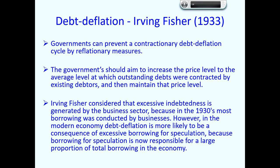Irving Fisher said that governments can prevent this contractionary debt deflation cycle by reflating the economy. Fisher proposed that governments should aim to increase the price level to the average level at which outstanding debts were contracted by existing debtors, and then maintain that price level. So avoiding deflation prevents personal debts becoming more onerous to repay due to deflation, and people will still be able to repay their debts — avoiding the debt deflation cycle developing.